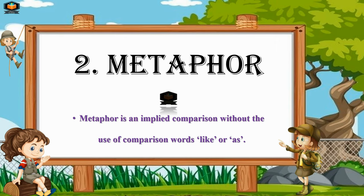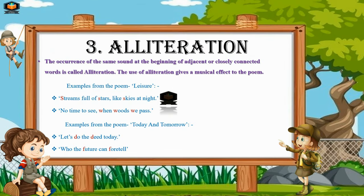The second literary device is metaphor. Metaphor is an implied comparison without the use of comparison words like 'like' or 'as.' Both simile and metaphor are used for comparison, but in simile we use 'like' or 'as,' whereas in metaphor we don't use these words.